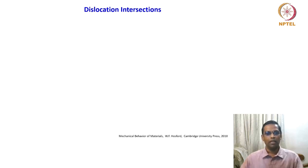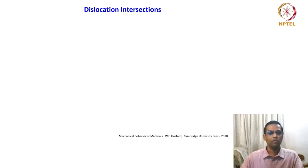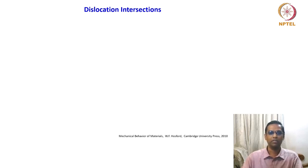I will stop here. The next topic I want to discuss is dislocation intersections — just a few examples of dislocation intersections and how they contribute to microstructural stability and control mechanisms like phase transformation mechanisms. We will see it in the next class. Thank you.